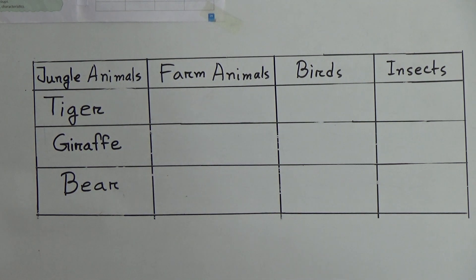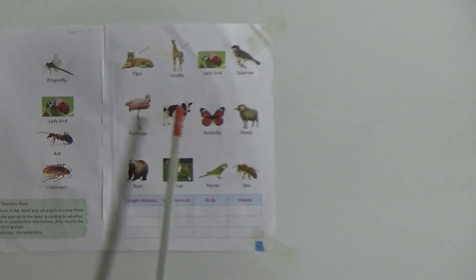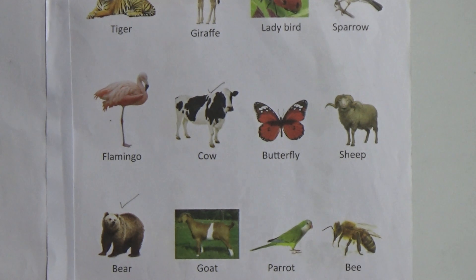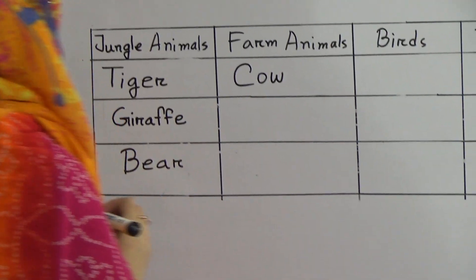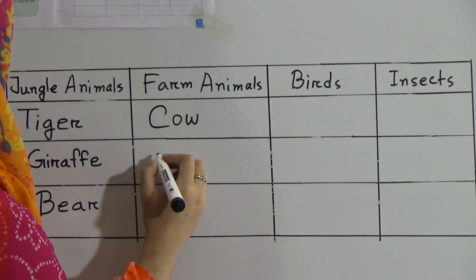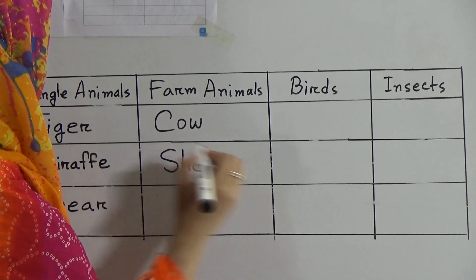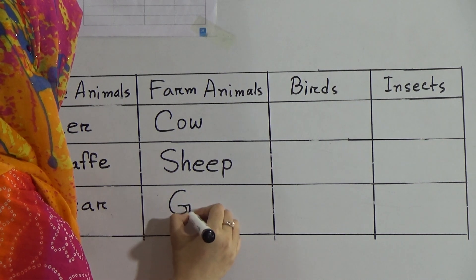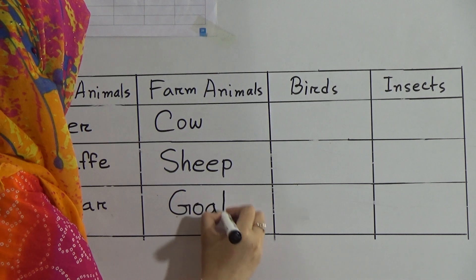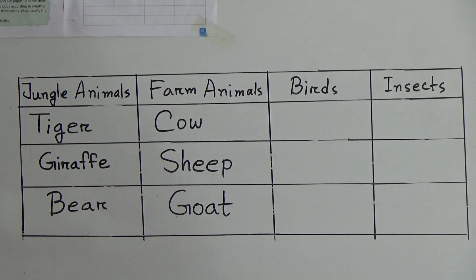Which one is farm animal? Identify them. Yes, this one — cow — cow is a farm animal. And after that sheep — sheep is a farm animal from this picture. And last one here is goat — goat is also a farm animal. Let's write: cow, spelling C-O-W; sheep, spelling S-H-E-E-P; and goat, spelling G-O-A-T.